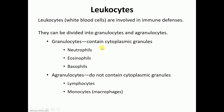Granulocytes have cytoplasmic granules, and when we stain them with different stains we get different colors. If the granules are red in color we call those eosinophils. If they're blue, those are basophils. If they're neutral — kind of a purple, somewhere between red and blue — those we call neutrophils.